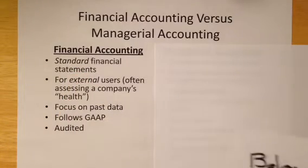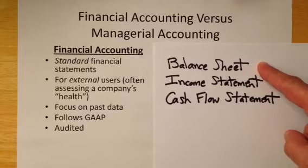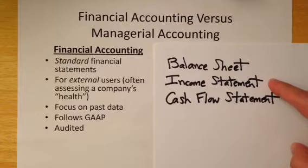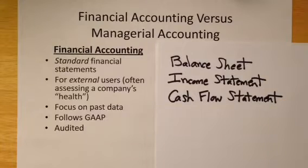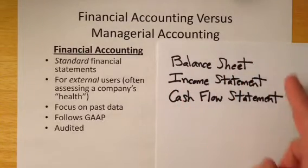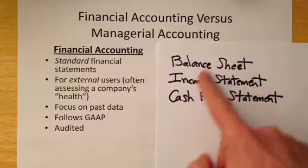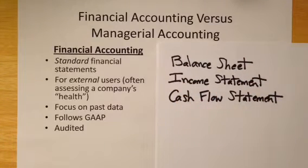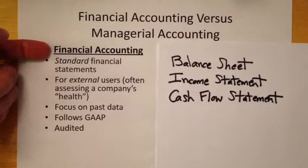Do you remember the different types of financial statements from financial accounting? There was the balance sheet, which showed assets, liabilities, and equity. The income statement showed revenues and expenses, along with other accounts needed to figure out net income. There was also the cash flow statement, and you may recall a retained earnings statement or a statement of stockholders' equity. These were the standard financial statements — the bottom line and reason for financial accounting.